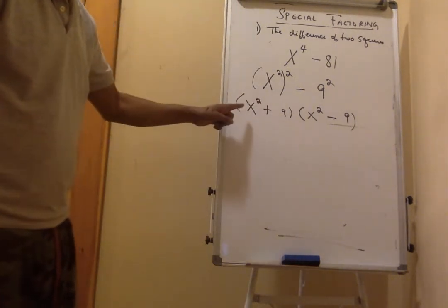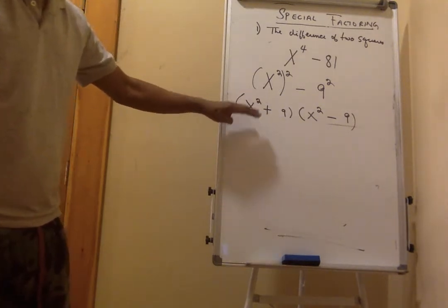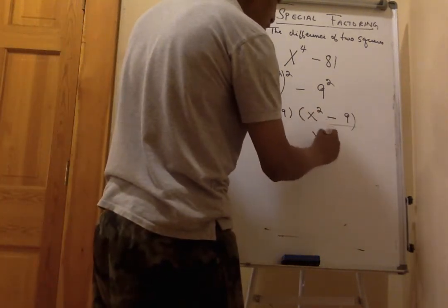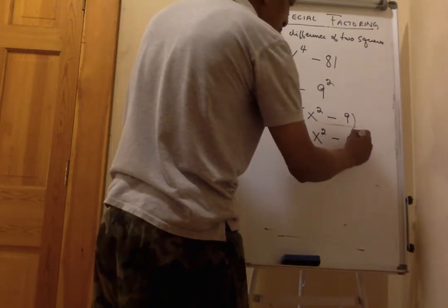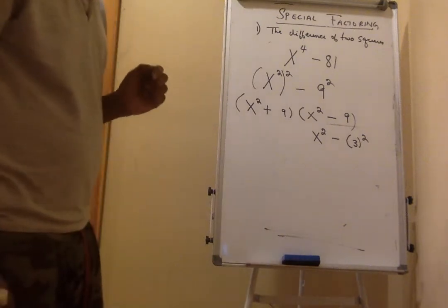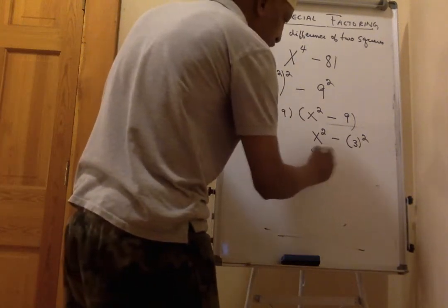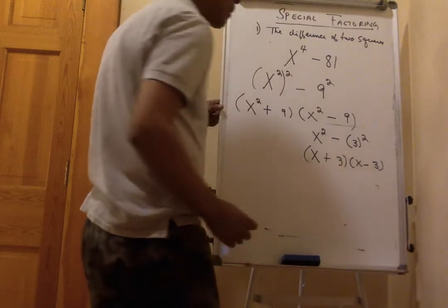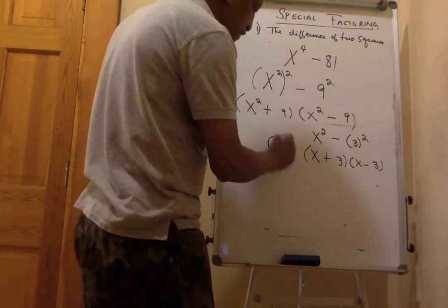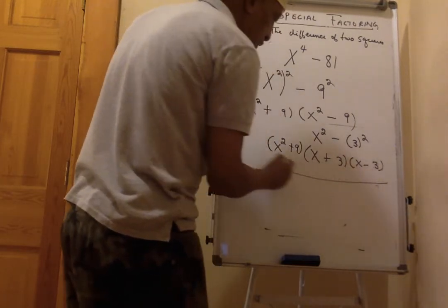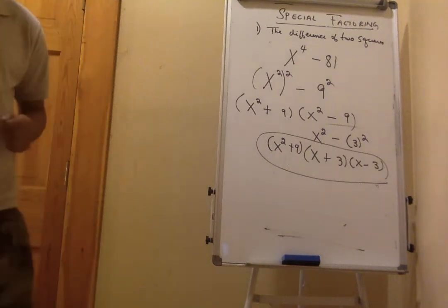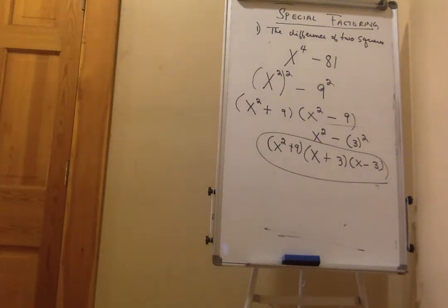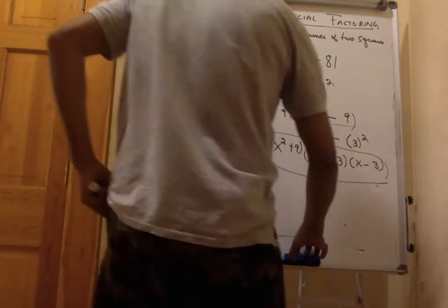We don't have the sum of two squares, so x squared plus 9 is prime — we cannot factor it. But we can factor x squared minus 9 one more time: x squared minus 9 is x squared minus 3 squared, which gives us (x+3)(x-3). Bringing x squared plus 9 back, the final factored form of x to the fourth minus 81 is (x squared + 9)(x+3)(x-3). That concludes the difference of two squares.